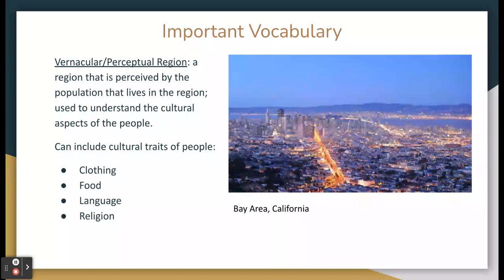A vernacular region, or a perceptual region, is a region that is perceived by the population that lives in the region. It is often used to understand the cultural aspects of the people. Some of the cultural traits of the people can include clothing, food, language, religion, and more. An example of a vernacular region could be the Bay Area.